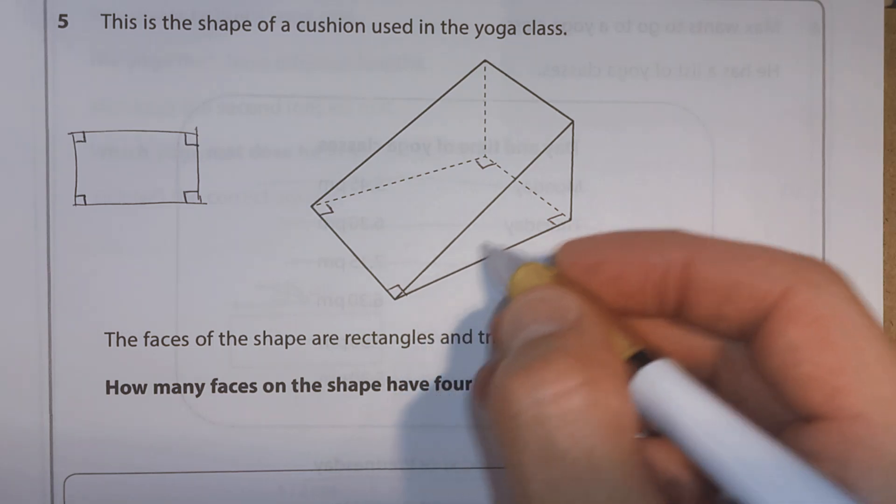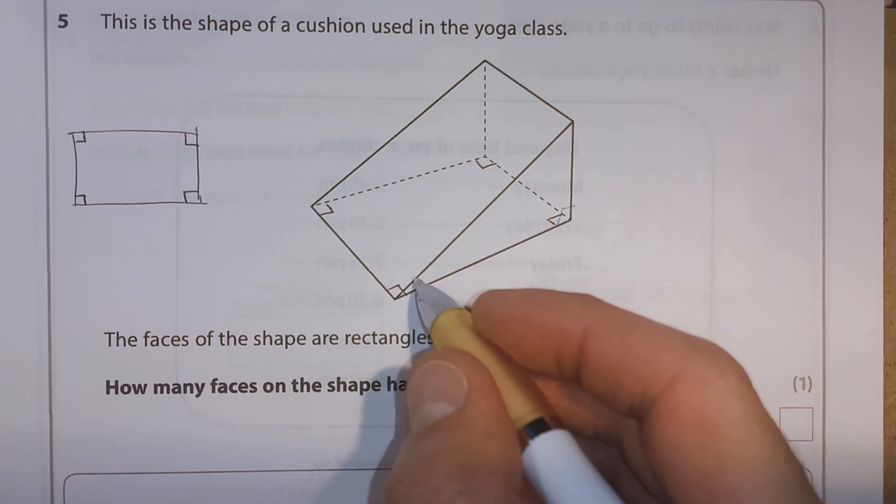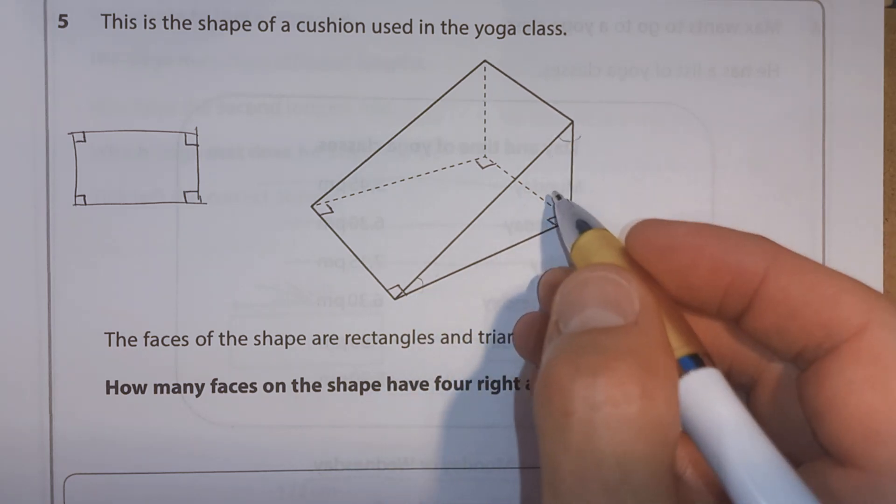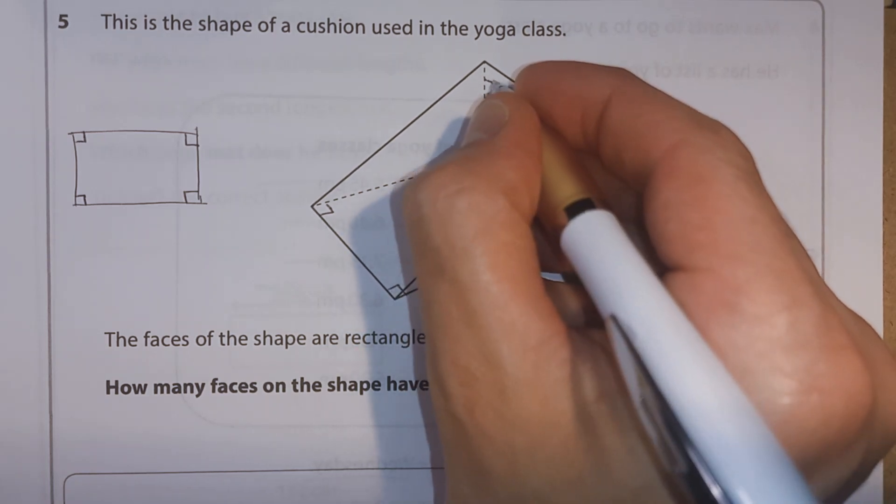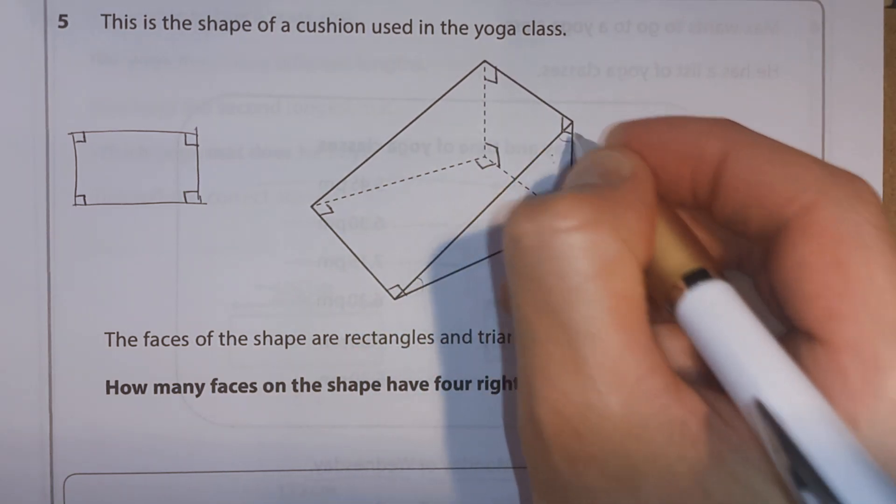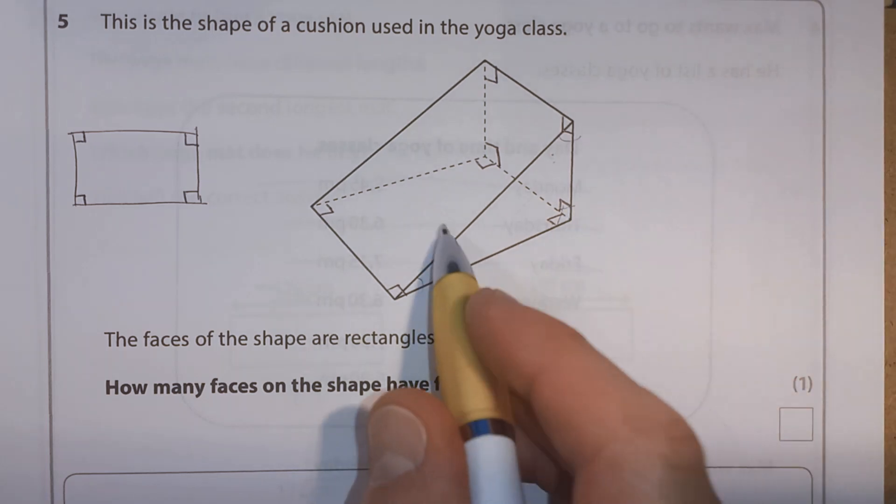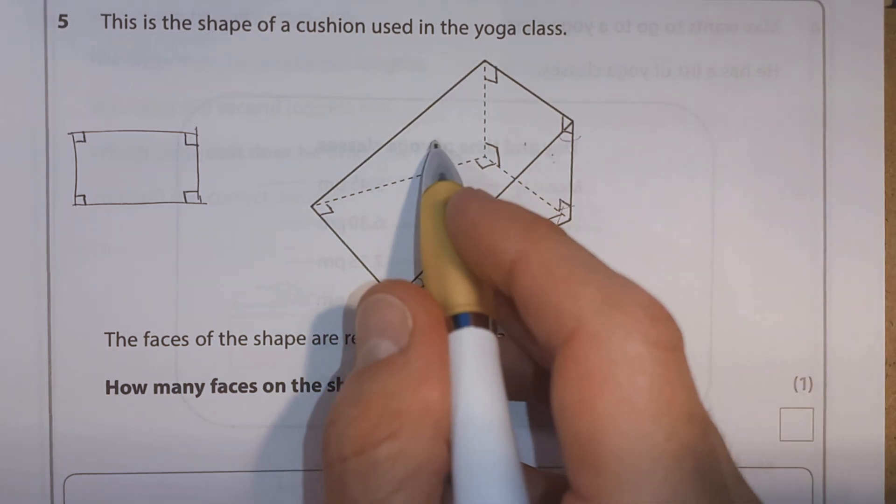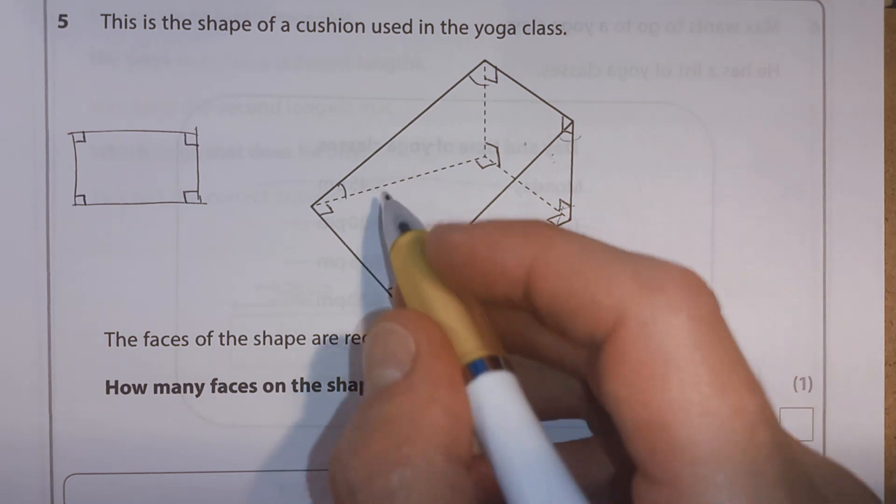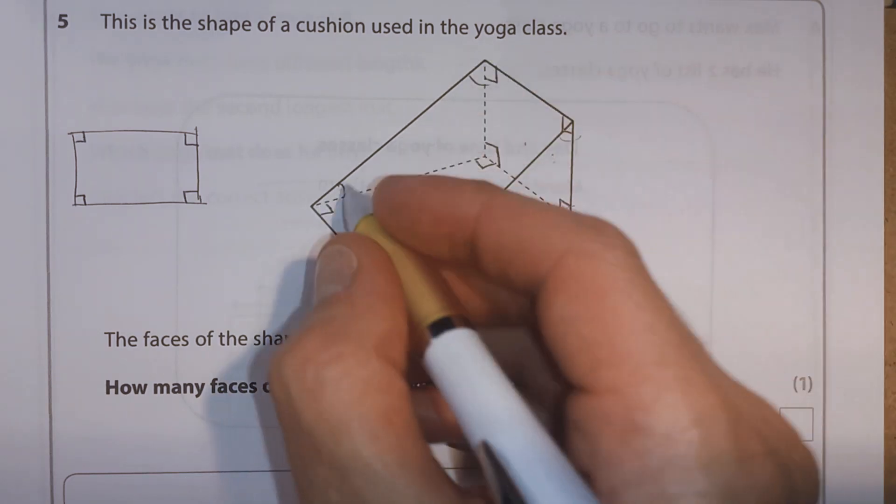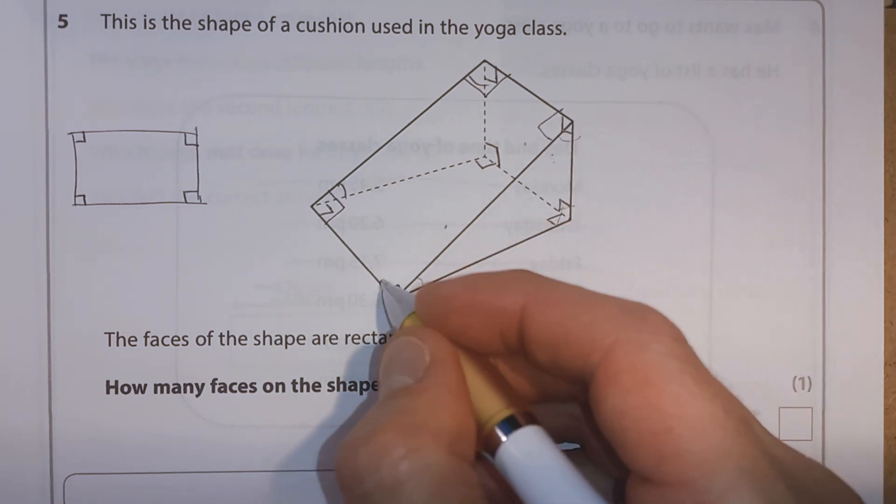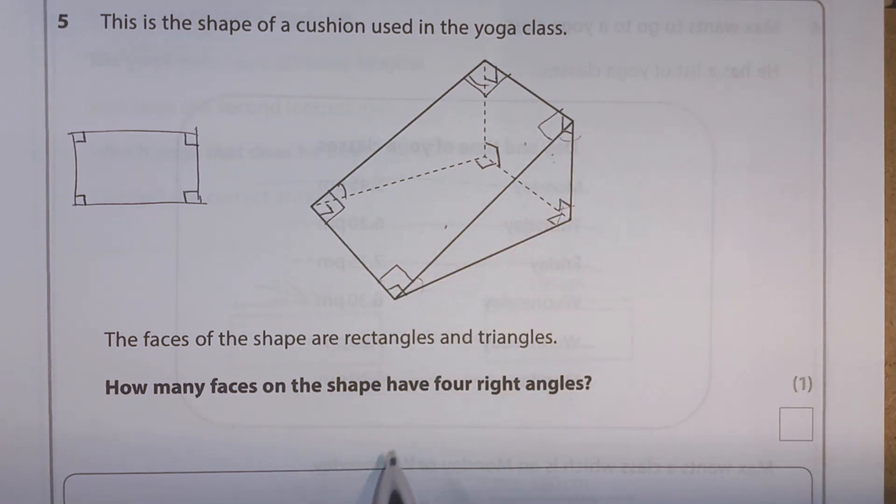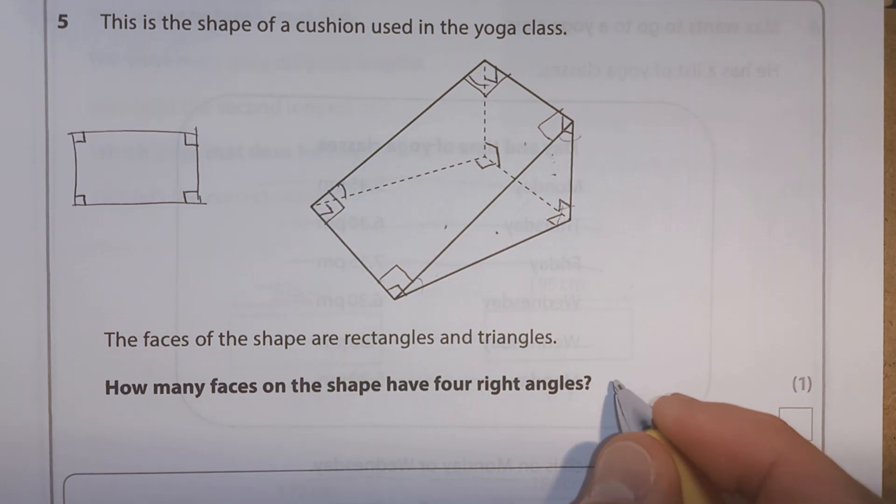Well, then we've got this triangle at the side. We'd have a right angle here, but those wouldn't be right angles. What about this back piece? We'd have a right angle there, and there, and there, and there. So we've got the base, we've got the back. This triangle, again, you're not going to have any there. But what about this top piece? We'd have one, two, three, four right angles. So we've got the base, the back, and the top. So we'd have three.